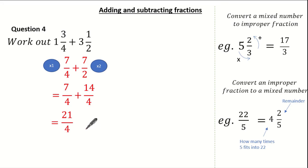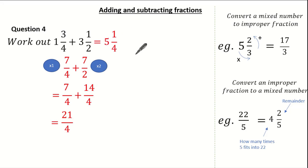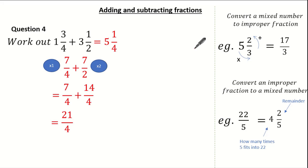Now let's convert it back into a mixed number. How many times does 4 go into 21? It's 5, remaining 1. So my final answer is 5 and 1 quarter. Remember, this works for addition and subtraction of fractions. I hope this has been of some help when you're adding and subtracting fractions. Remember to use your knowledge on converting mixed numbers to improper fractions and improper fractions to mixed numbers. When you have different denominators, always identify the lowest common multiple.